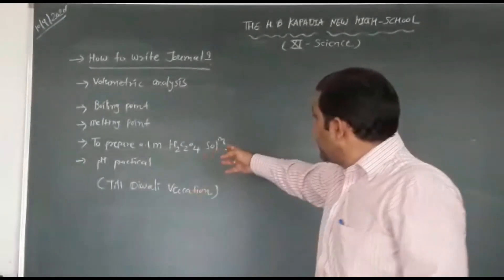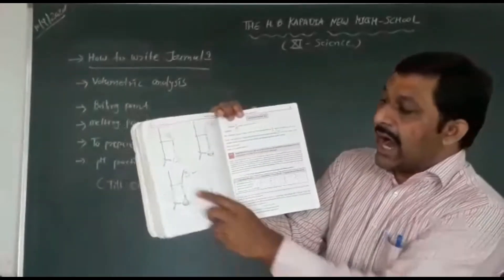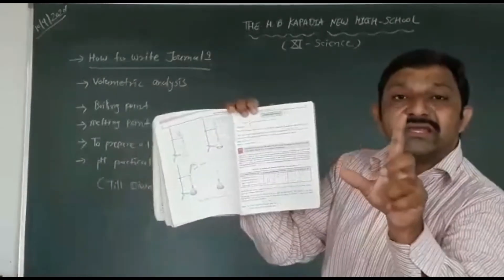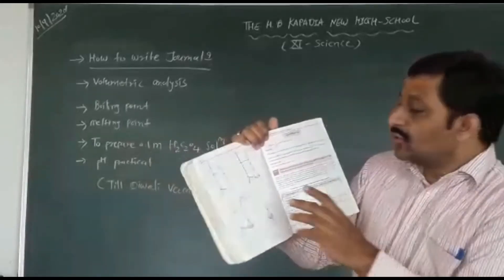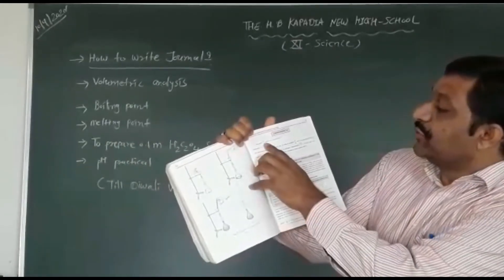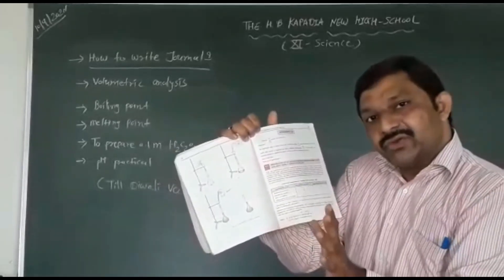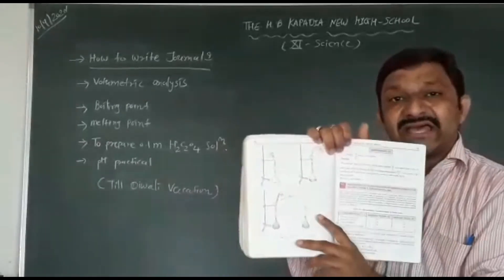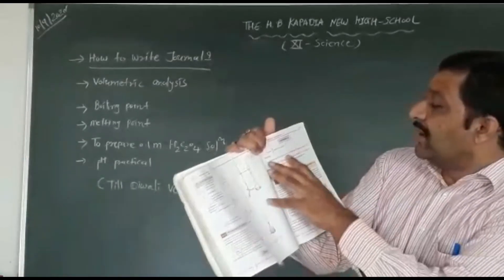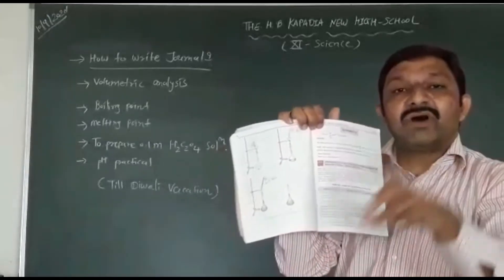Next is to prepare 0.1 molar oxalic acid solution. Draw the figure for this practical. Use oxalic acid powder, take the required weight, and prepare the oxalic acid solution. Write the aim — to prepare 0.1 molar oxalic acid solution — then theory and procedure. This practical is given on page number 59 in your manual.